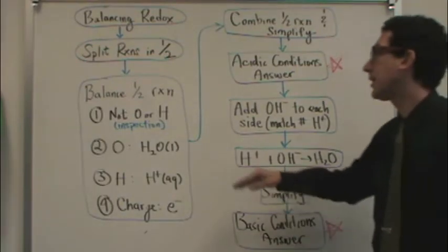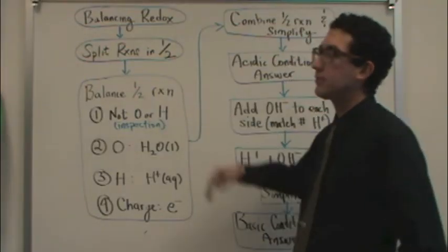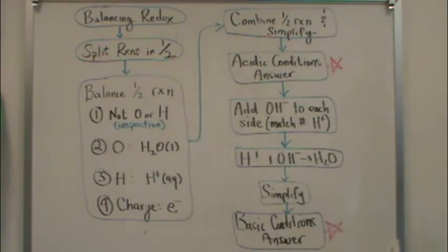Okay, what's those four steps? Well, first look for whatever's not oxygen nor hydrogen, and then you balance that by inspection. So for example, say you need two aluminums on each side or whatever that's not oxygen or hydrogen.